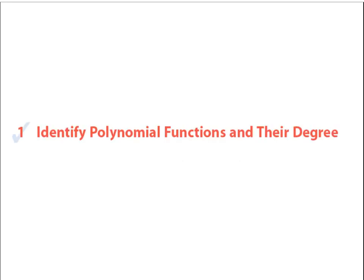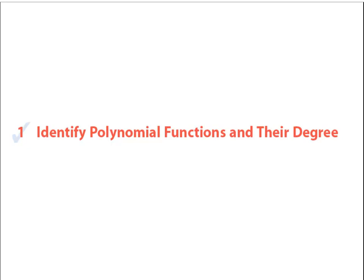To begin 5.1, we want to identify the standard form of a polynomial function. In this form, we have a variable x raised to an exponent or power. The exponent n must be a non-negative integer — meaning a whole number: 0, 1, 2, 3, 4, 5, 6, and so on. So these exponents cannot be fractions and they cannot be negative numbers.